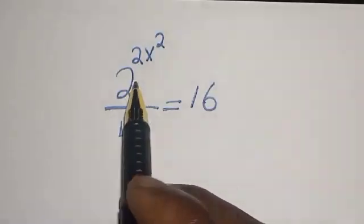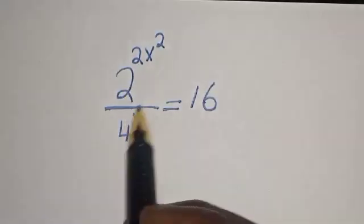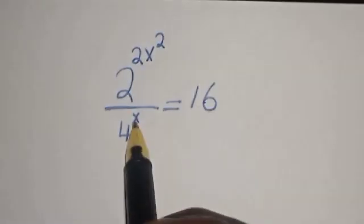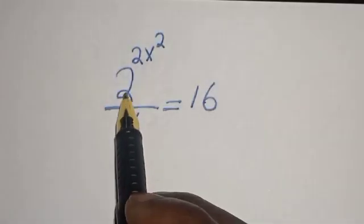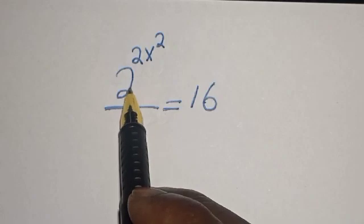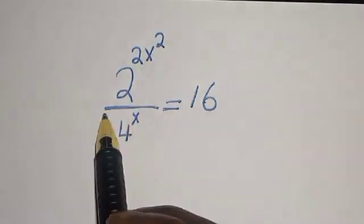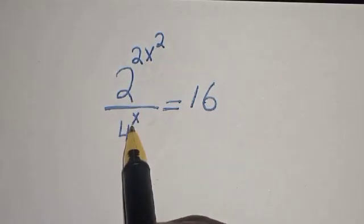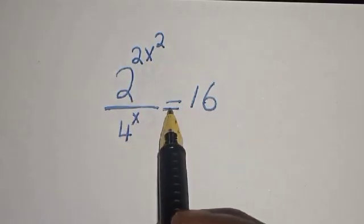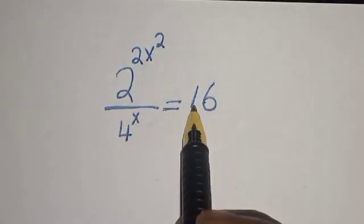Hello, welcome to Math Gist. In this class we want to find the value of s from the equation: 2 raised to the power 2s squared, divided by 4 raised to the power s, is equal to 16.